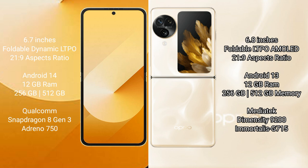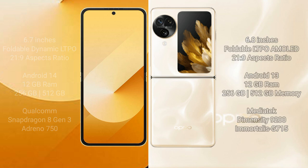The Samsung Galaxy Z Flip 6 runs on the Android 14 operating system, while the Oppo Find N3 Flip runs on Android 13. Both phones come with 12GB RAM and 256GB or 512GB internal storage. The Galaxy Z Flip 6 features a Qualcomm Snapdragon 8 Gen 3 processor, while the Oppo Find N3 Flip uses a MediaTek Dimensity 9200 processor.